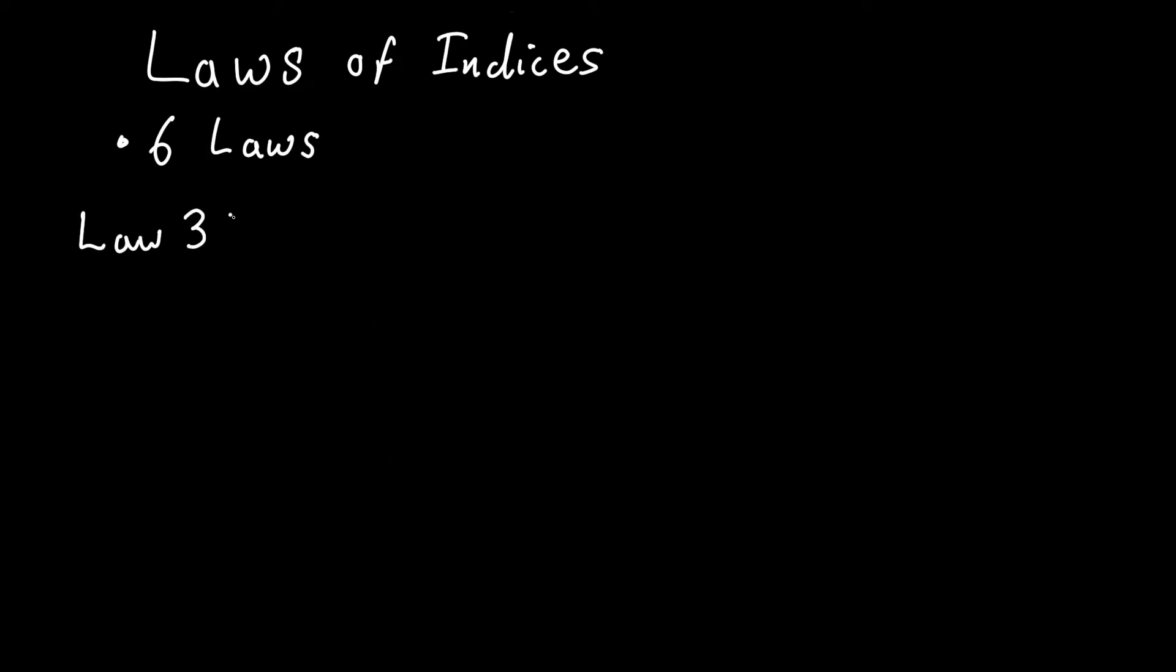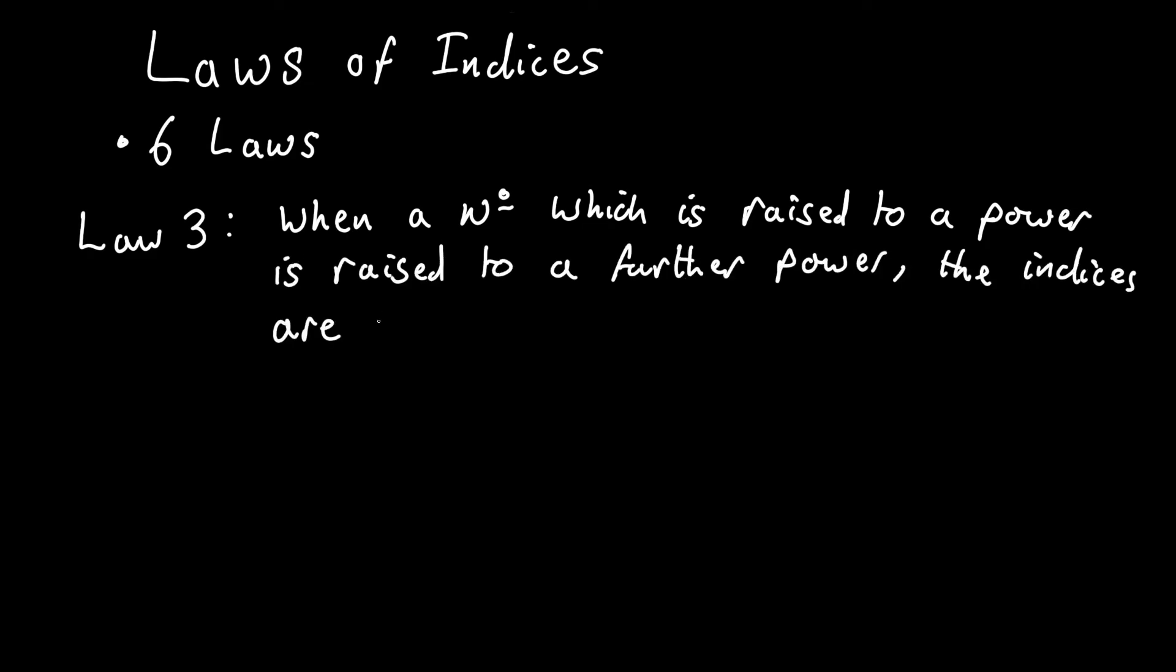Law 3: When a number, which is raised to a power, is raised to a further power, the indices are multiplied. In other words, a to the power of m, all raised to the power of n equals a to the power of m times n. We can quickly show this with an example. When you expand out the expression, you can see why the indices are multiplied.